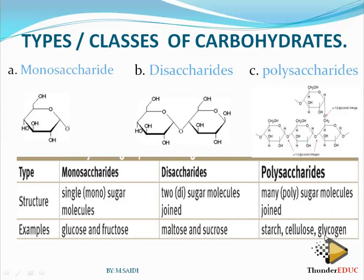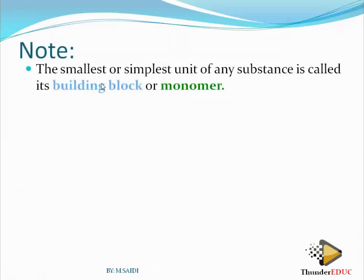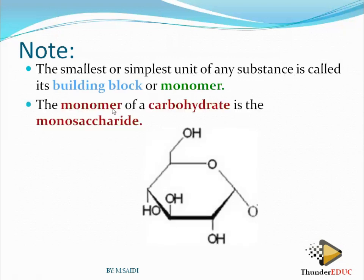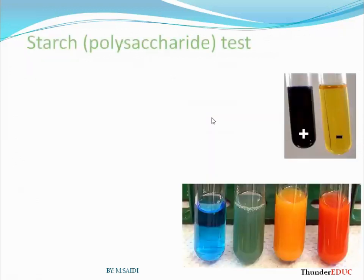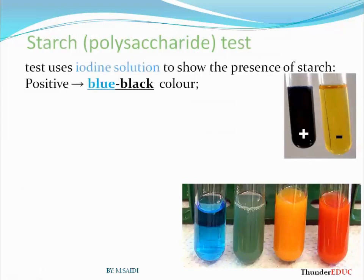You need to know that the smallest or simplest unit of any substance is called a building block — like bricks in a house. In science, we call these monomers. The monomer of carbohydrates is a monosaccharide, and an example is a glucose molecule. So glucose is the monomer of carbohydrates.